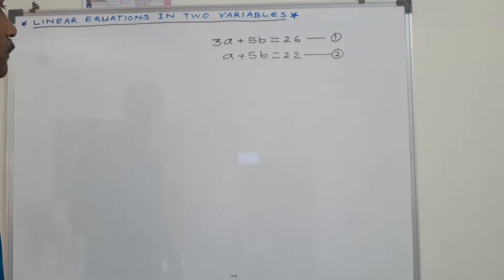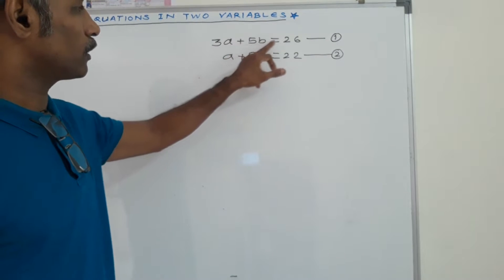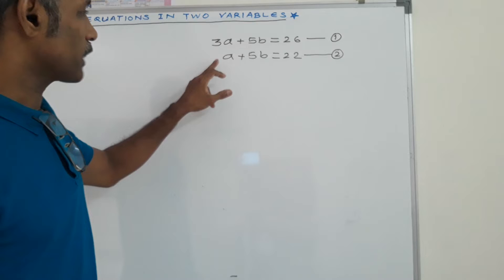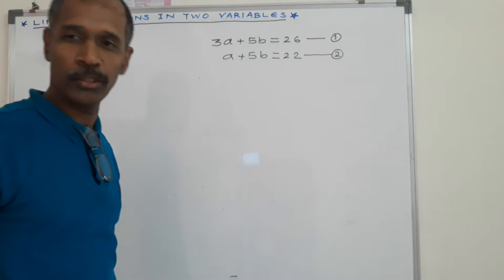Linear equations in two variables. First equation: 3A plus 5B is equal to 26. Second equation: A plus 5B is equal to 22.